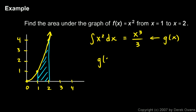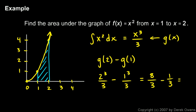So I'm going to find g(2) minus g(1). And that's pretty easy. g(2) is just going to be 2³/3, and g(1) is just going to be 1³/3. So it's 2³/3 minus 1³/3. That's 8/3 minus 1/3. And that's our answer, 7/3.